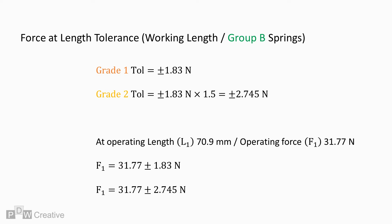The 1.5 multiplication factor is again applicable to Group B, Grade 2 springs. In this case, the tolerance increases to plus or minus 2.745 newtons.